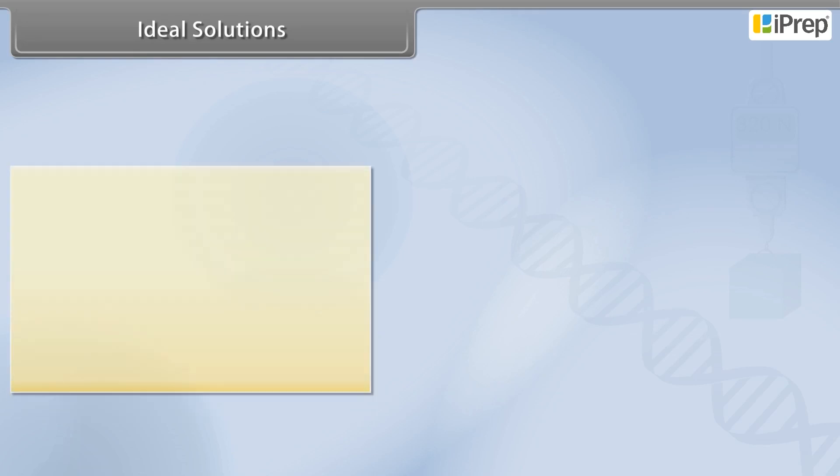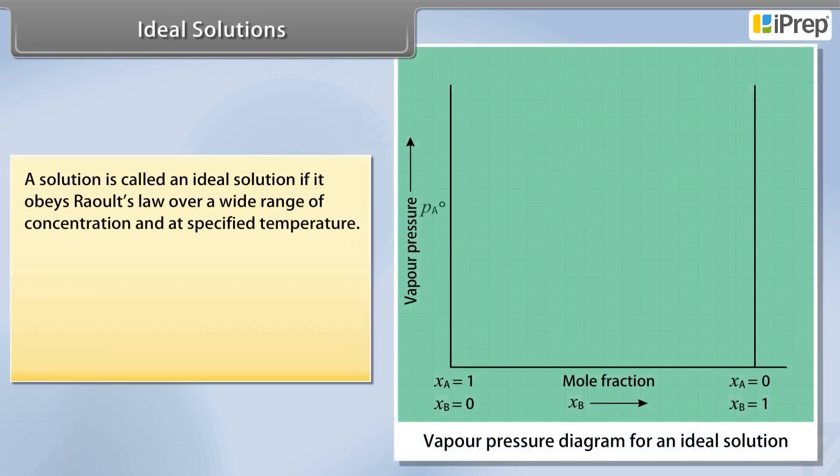Ideal solutions. A solution is called an ideal solution if it obeys Raoult's law over a wide range of concentration and at specified temperature.